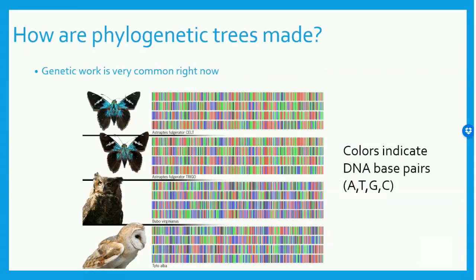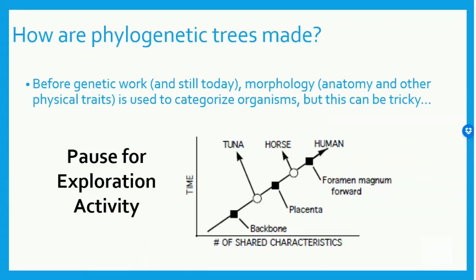These trees aren't just artistic creations — they are results of research in visual form. Currently, using genetic sequences to create phylogenetic trees is very common. In this picture, the small bands of color represent DNA base pairs. Before genetic work, and even still today, morphology is used to categorize organisms. Morphology is the anatomy and physical traits of an organism. Pause the video now and complete the exploration activity to make a phylogenetic tree of your own.